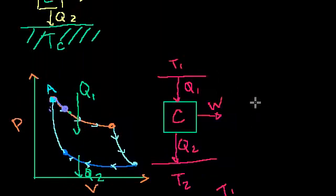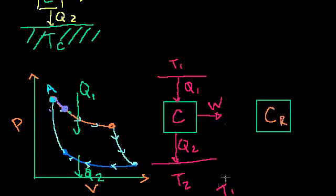This is the Carnot engine. It does work by using heat, by taking advantage of the heat difference between this hot, you could view this as the T hot and the T cold. Now, a reverse Carnot engine, or maybe you call it a Carnot refrigerator, does the opposite.